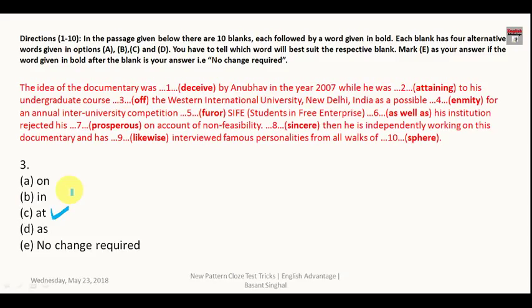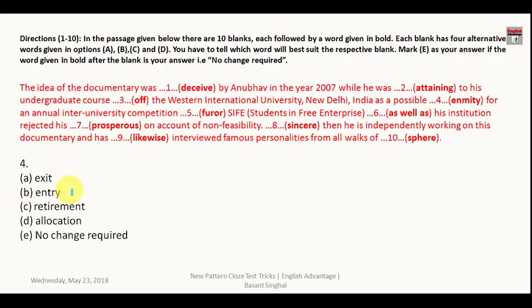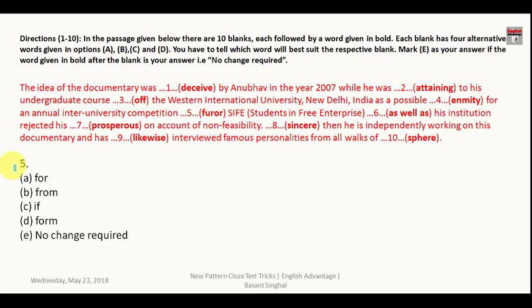The next blank refers to an annual inter-university competition. In a competition we always 'take part' and put our entry, so the correct answer is 'entry' — put our entry for an annual inter-university competition. For SIFE, that is Students in Free Enterprise, he was putting his entry into the competition, so 'for' is also correct here.